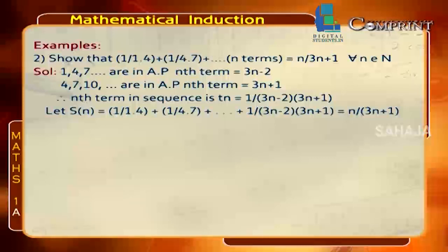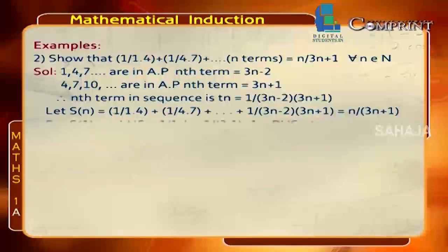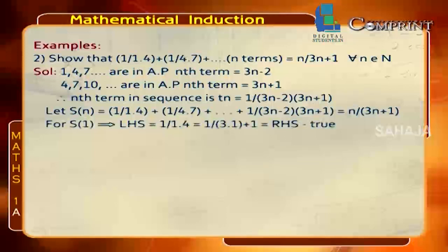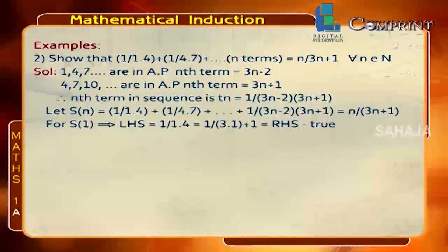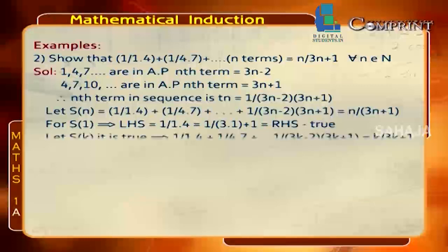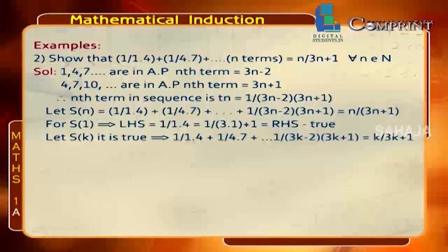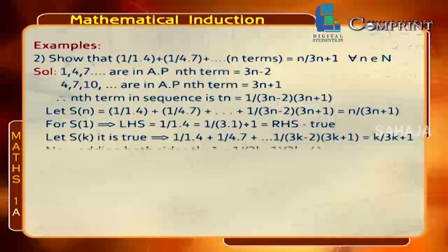Let S(n): 1/(1×4) + 1/(4×7) + … + 1/[(3n−2)(3n+1)] = n/(3n+1). For S(1): LHS = 1/(1×4) = 1/4, and RHS = 1/(3×1+1) = 1/4. So LHS = RHS, which is true. Assume S(k) is true: 1/(1×4) + … + 1/[(3k−2)(3k+1)] = k/(3k+1).